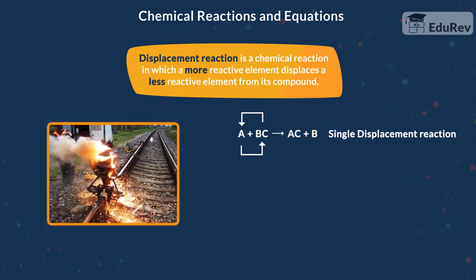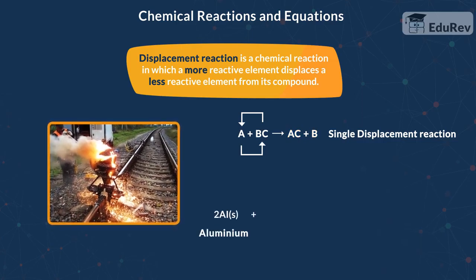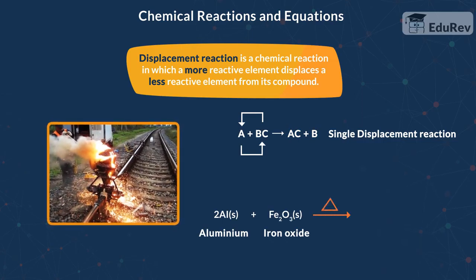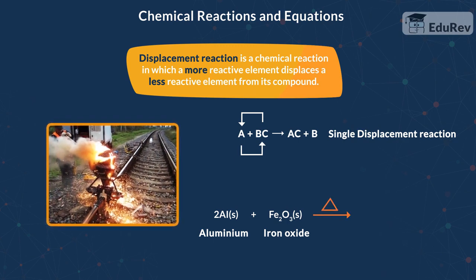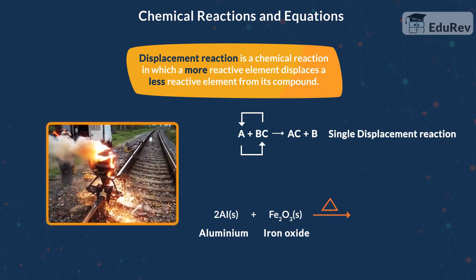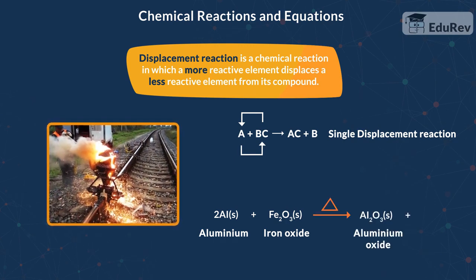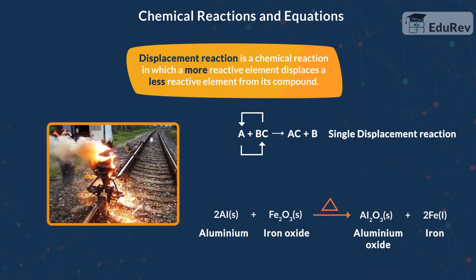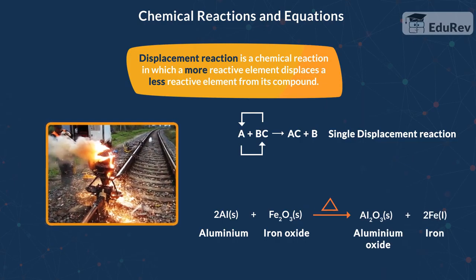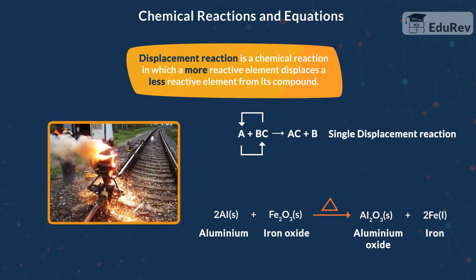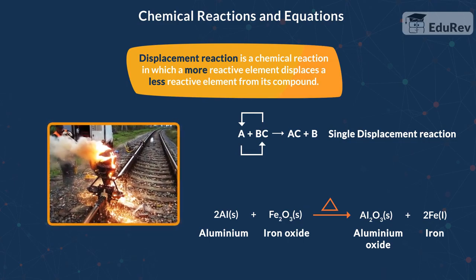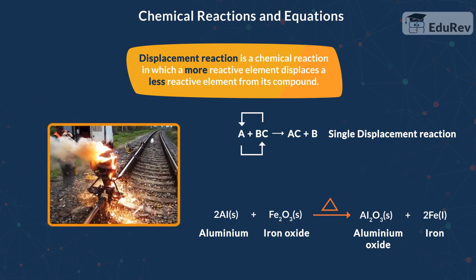So when we mix aluminium with ferric oxide, aluminium displaces iron from ferric oxide to form aluminium oxide and setting iron free. Please note this reaction is performed under specific conditions not mentioned in the above reaction. This is one way of obtaining molten iron.